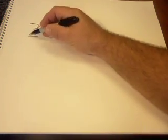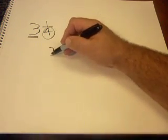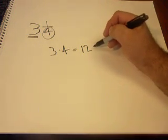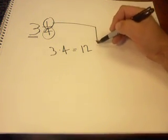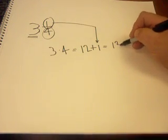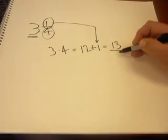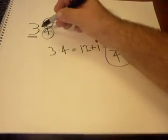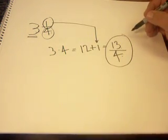We're going to take the whole number here, the 3, and multiply it by our denominator. So 3 times 4 is equal to 12. And then we're going to add to it our numerator. Whatever our numerator is, we're going to add it to there. So 12 plus 1 is 13, and we still have the same denominator, 4. Nothing happened to the denominator. So 3 and a quarter is the same thing as 13 fourths.